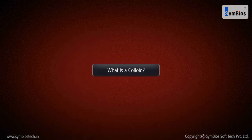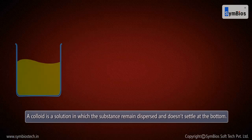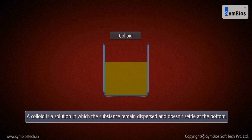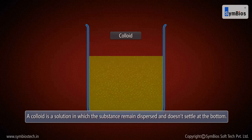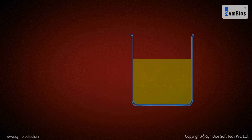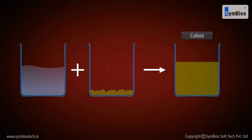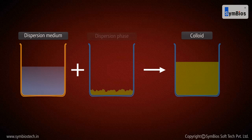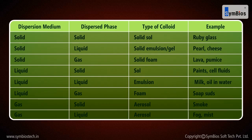A colloid is a solution in which the substance remains dispersed and doesn't settle at the bottom. It consists of two components: dispersion medium and dispersion phase. Here is a list of different types of colloids that are formed due to different types of dispersion phase and medium.